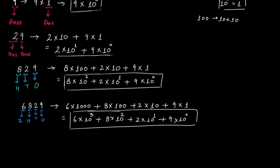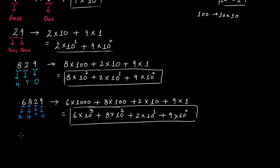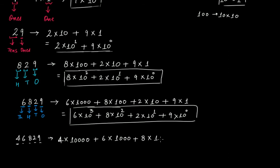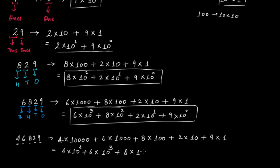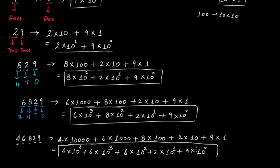Similarly, if the number is 46829, we have a 1's place, 10's place, 100's place, 1000's place, and now a 10,000's place. So this is 4 times 10,000 plus 6 times 1000 plus 8 times 100 plus 2 times 10 plus 9 times 1. In exponential form: 4 times 10 to the fourth power, plus 6 times 10 to the third power, plus 8 times 10 to the second power, plus 2 times 10 to the first power, plus 9 times 10 to the exponent 0. This is the exponential form of 46829 using powers of 10.